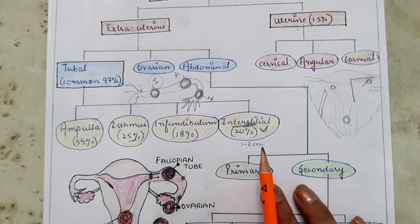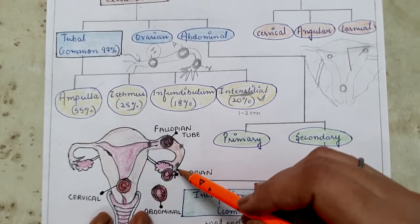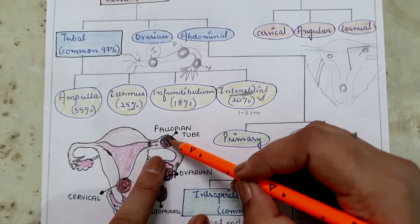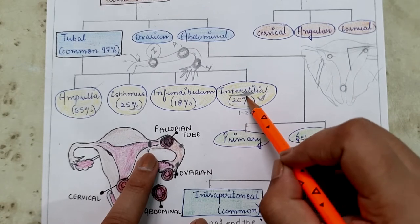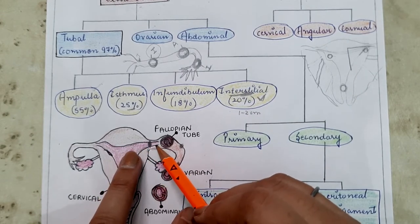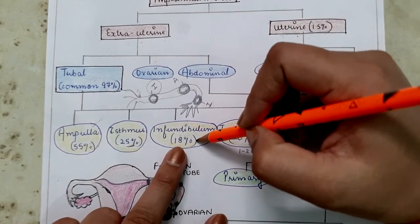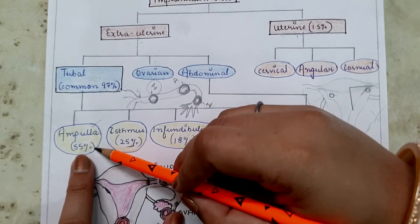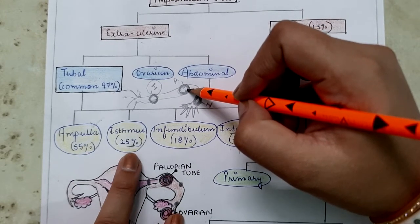Under tubal pregnancy there are four implantation sites corresponding to different parts of the fallopian tube: infundibulum, ampulla, isthmus, and interstitial. In 18% of cases the fertilized ovum implants at the infundibulum.